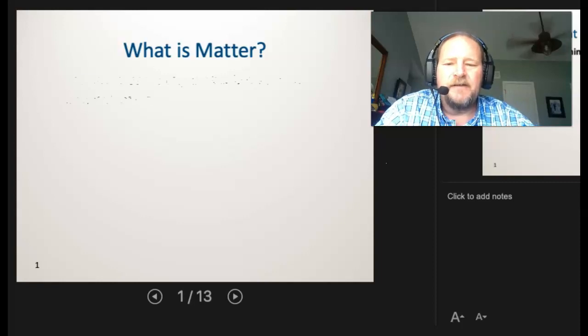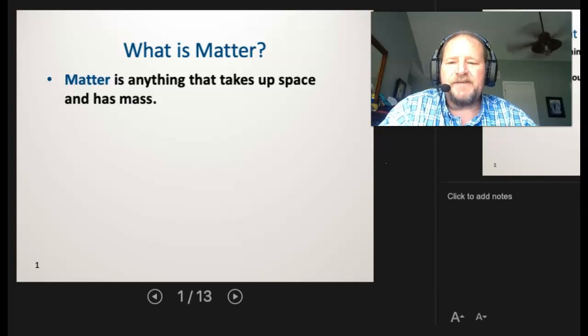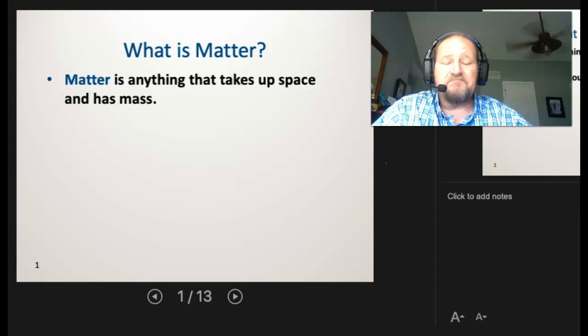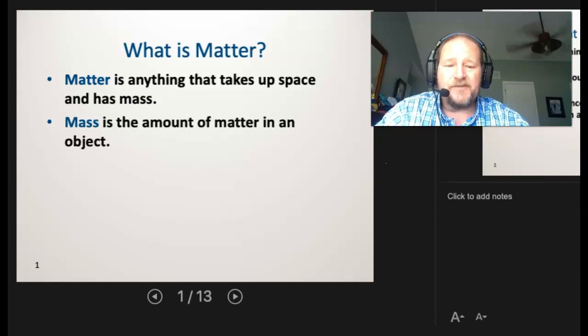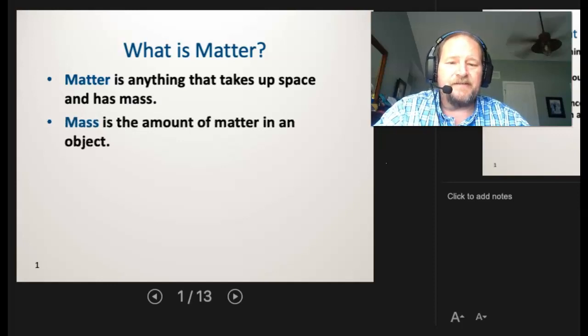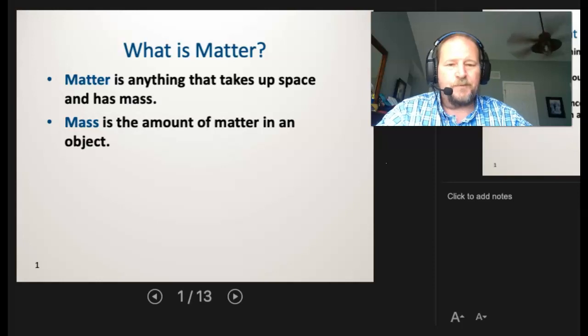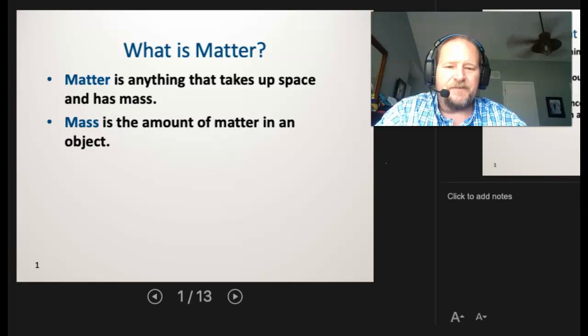And now we're going to shift gears and start to look at matter. So what is matter? Well, matter is anything that takes up space and has mass. What's mass? Well, mass is the amount of matter in an object. So right there we see we have a sort of a loop going. And so that's not a very good definition of mass. So let's give a different definition of mass.